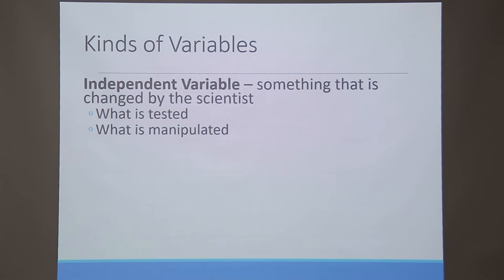Before setting up the variables, you should have a good knowledge about your topic. For that you have to search the internet and look for all available literature. You should do a thorough review of literature. Once you do the review of literature, you will have an understanding about what kind of research is going on. Once you are clear about the topic, you can think about considering the variables.